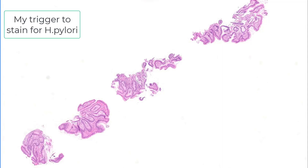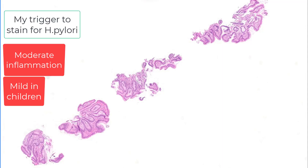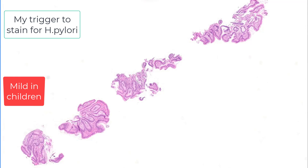I spend a limited amount of time looking for the bug on an H&E stain. If I don't see it, I very quickly order an immunohistochemical stain. When do I order the stain? When I see at least moderate inflammation, either in the body-fundic mucosa or in the antrum. When it's very mild, particularly in an adult, I will not order the stain. In kids, I will order it even with mild inflammation.